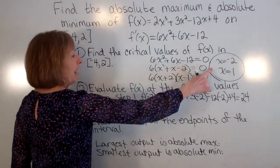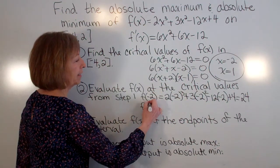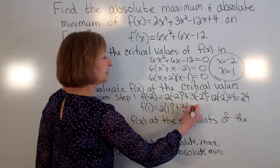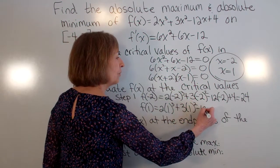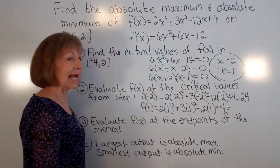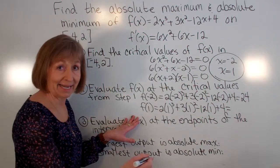Now do f(1). Well f(1) = 2(1)³ + 3(1)² - 12(1) + 4. And f(1) = -3.